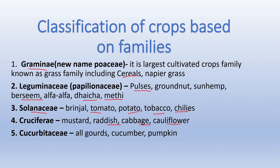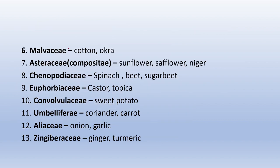The Cruciferae family is also called the Brassicaceae family. The Compositae/Asteraceae family gets its name because it contains a number of flowers — for example, when we look at a sunflower, it is not a single flower but a composite of many flowers. This family also includes safflower and niger.